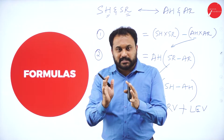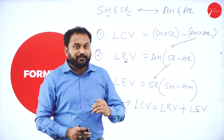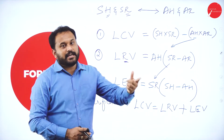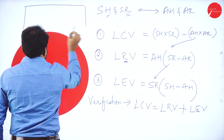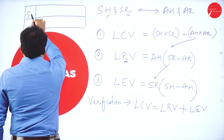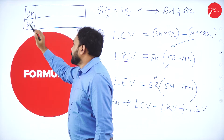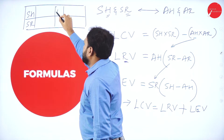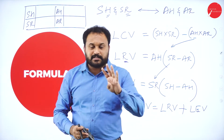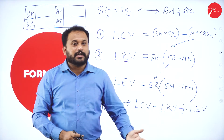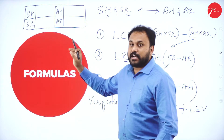In material we had SQ, SP, AQ, AP. In labor we have SH, SR, AH, AR, and we proceed the same way. Whenever you get the question, put a box and fill in SH, SR, AH, AR — remember Hrithik Roshan (H, R). Find out these four things from the question, and you can solve any labor variance problem using the formulas.